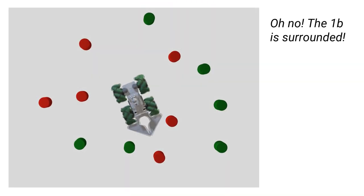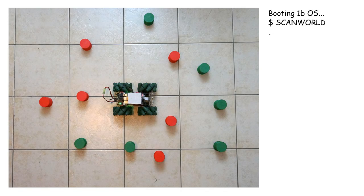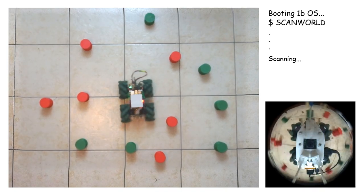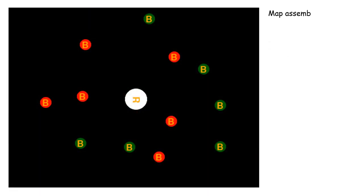Imagine the 1B surrounded by obstacles. Let's watch it map. It spins to scan its environment. Then, using sensor fusion to cross-check distance measurements between the two camera systems, the 1B builds a detailed world map.